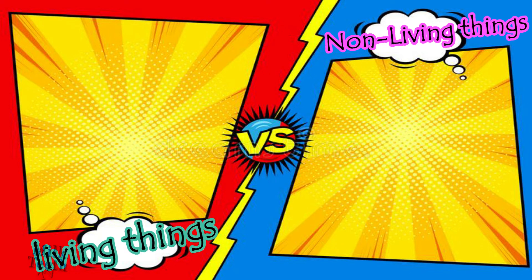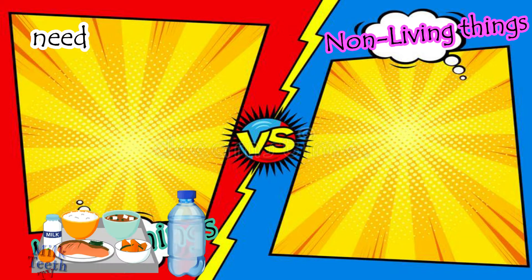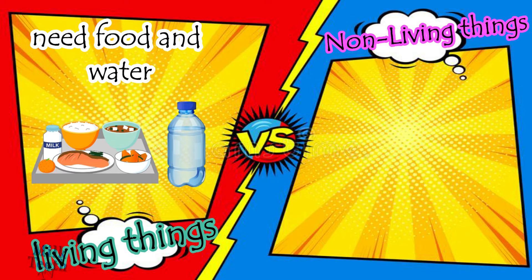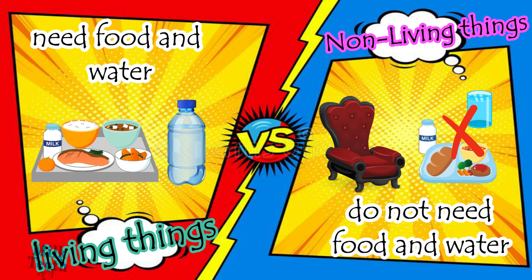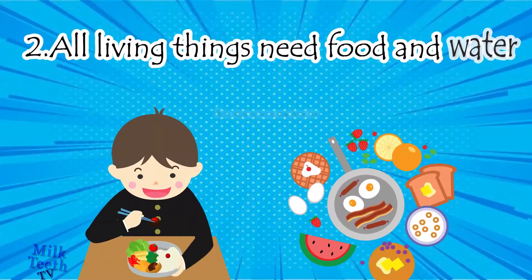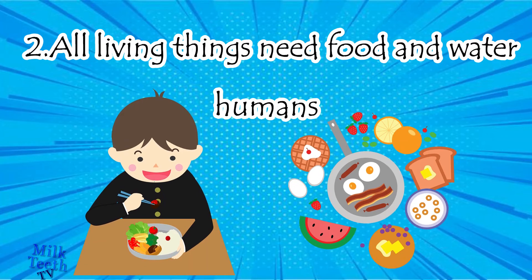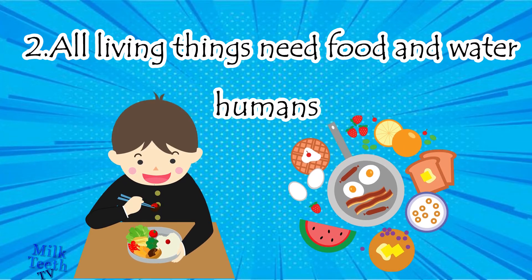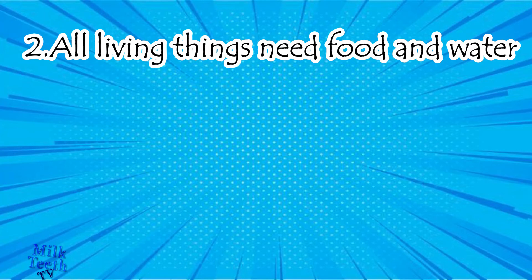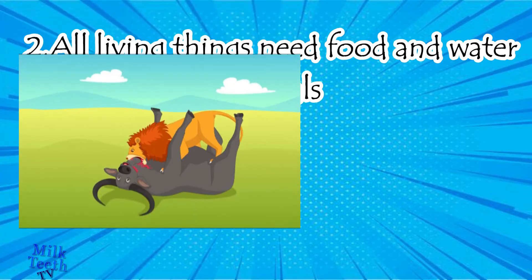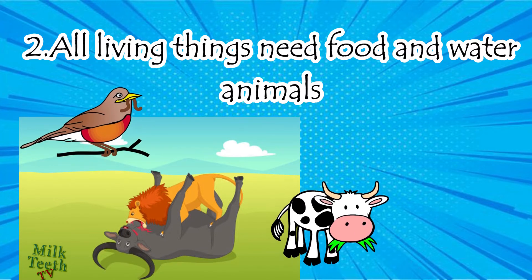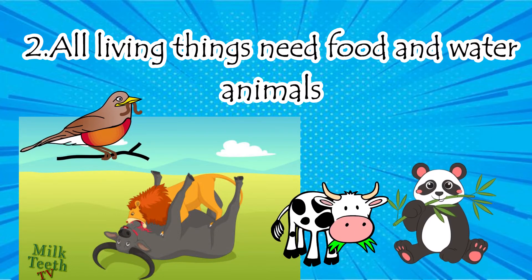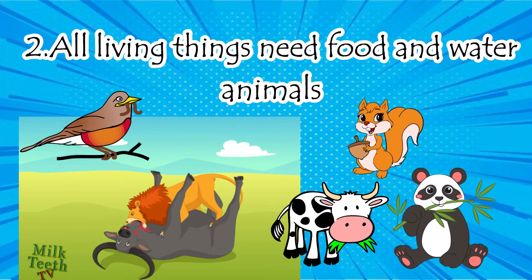The second difference is that all living things need food and water for their survival, while non-living things do not. Humans need food and water, as do all animals. A lion eats meat, a cow eats grass, a bird eats worms, a panda eats bamboo, and a squirrel eats nuts.